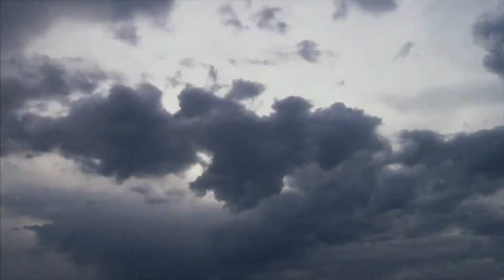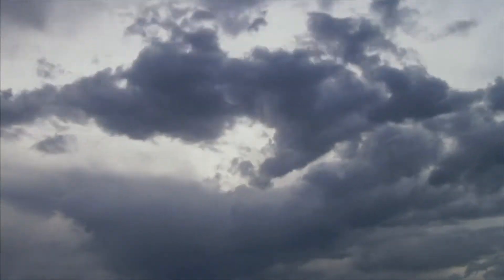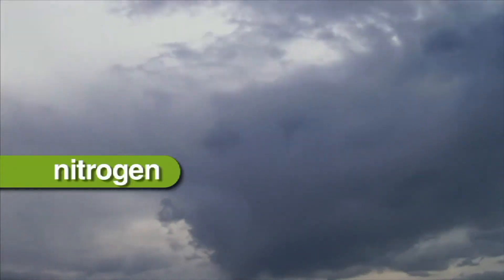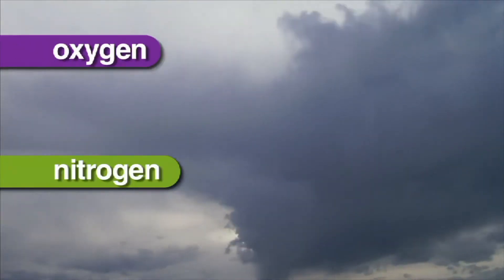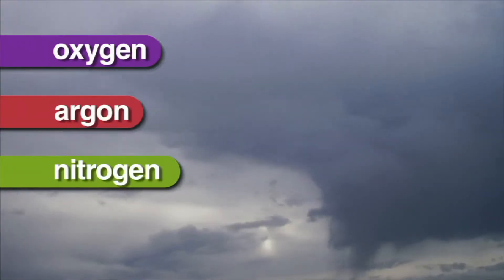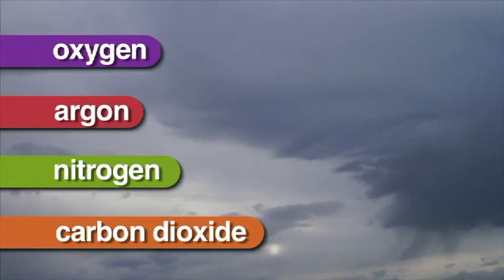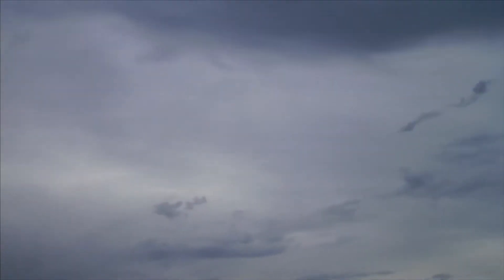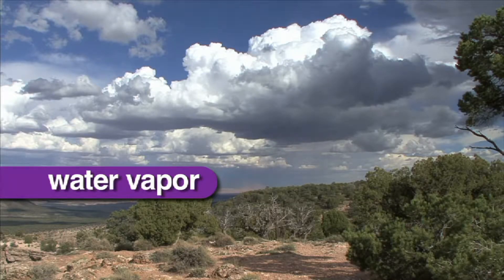Earth's atmosphere is a combination of gases, which include nitrogen, oxygen, argon, and carbon dioxide. A substantial amount of water vapor is an essential element in our air. It is the presence of water vapor that produces clouds and precipitation.